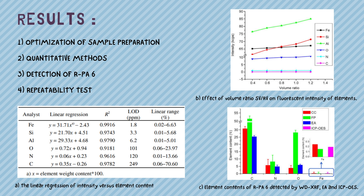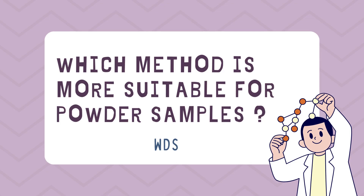For WDXRF analysis, the fundamental parameters (FP) and calibration curve methods for quantification were compared. The detection of RPA6 by the WDXRF calibration curve method was compared with ICP-OES and EA. The repeatability of the WDXRF method for the sample preparation process and quantification was also tested.